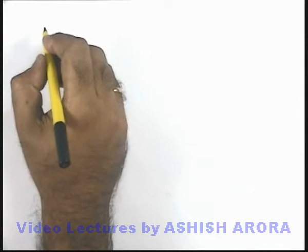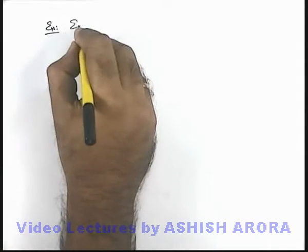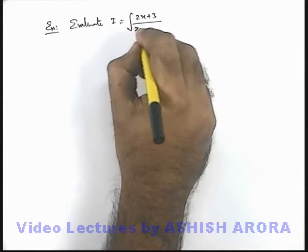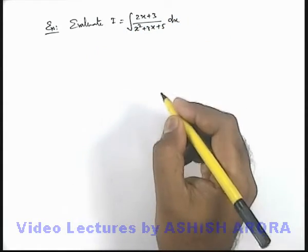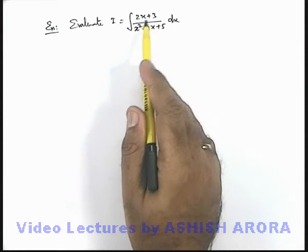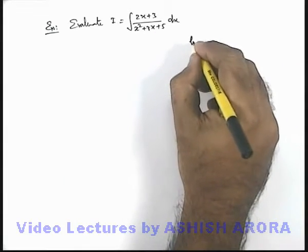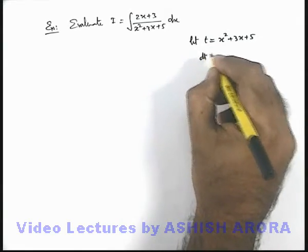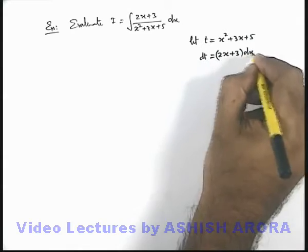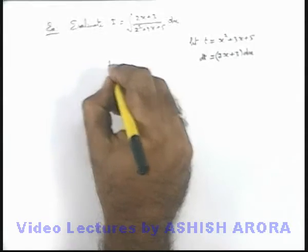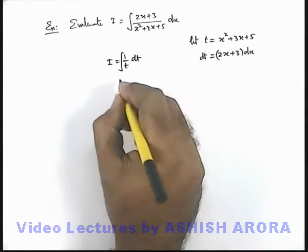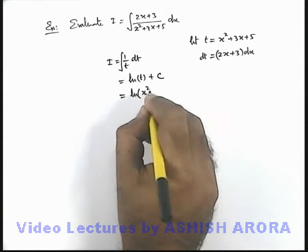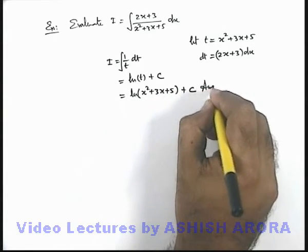Say we are given an example to evaluate the integral which is integration of (2x+3) by (x²+3x+5) dx. Here we can see that the numerator can be transformed as a derivative of the denominator. So we consider let t equal to x²+3x+5, and on differentiating dt equals (2x+3) dx. Substituting (2x+3) dx as dt, I becomes integration of 1/t dt, which results in ln|t| plus the constant of integration. So the result will be ln|x²+3x+5| plus c.